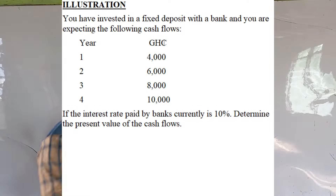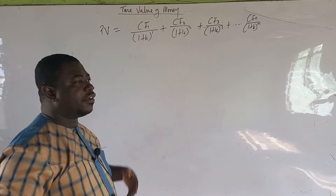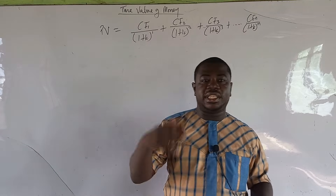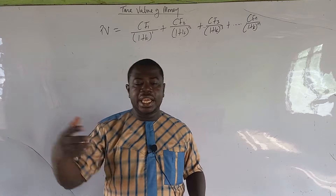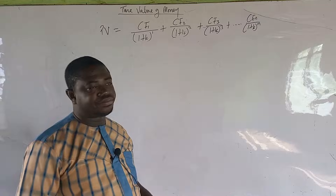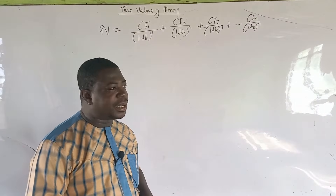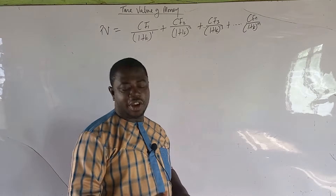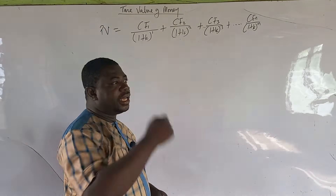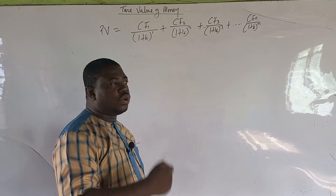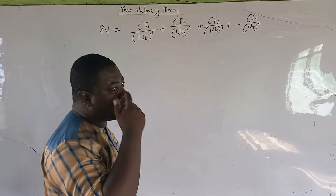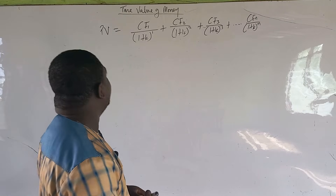In year one you are expecting 4,000 Ghana cedis, in year two 6,000 Ghana cedis, in year three 8,000 Ghana cedis, and in year four you are expecting to receive 10,000 Ghana cedis. The interest rate paid by banks currently is 10 percent. Determine the present value of the cash flows.